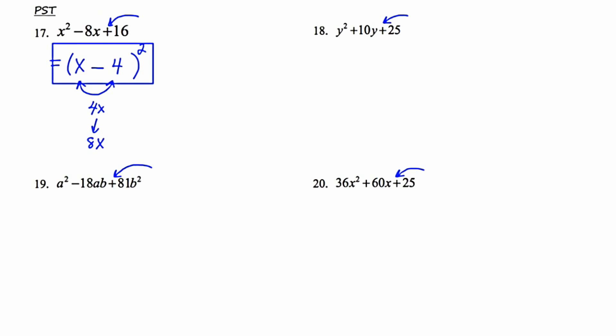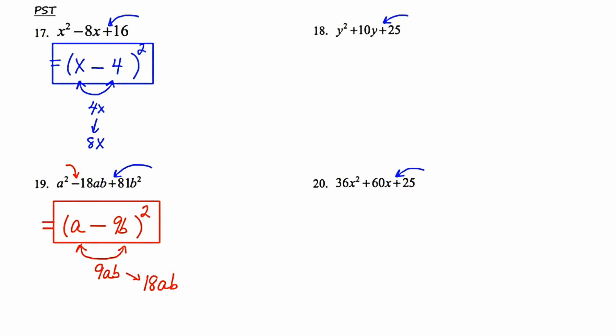Let's do number 19. It's a trinomial ending with a plus, and the first and last terms are perfect squares, so I strongly think it's a PST. The square root of a squared is a; the square root of 81b squared is 9b. Multiplying those gives 9ab, and doubling gives 18ab — which is precisely what's in the middle. It passes the test. Because the middle term has a minus, the factored form is (a − 9b) squared. If you're not confident, FOIL it out to check.